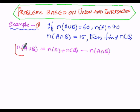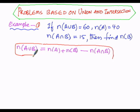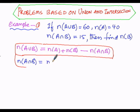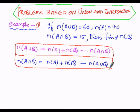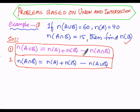To find n(A∪B), we add n(A) and n(B) and subtract n(A∩B). Alternatively, rearranging the formula: n(A∩B) = n(A) + n(B) − n(A∪B). We can apply either formula to solve for n(B).